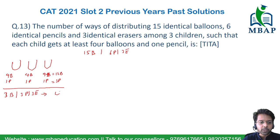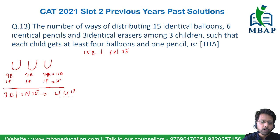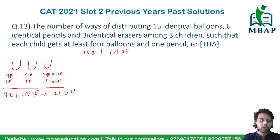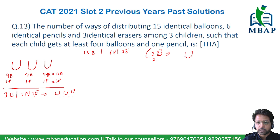These remaining items will be distributed among the 3 children with no further restrictions — it is possible that one or more children get 0 of any item. We can choose any element to distribute first; since all three item types have exactly 3 remaining, let's start by distributing the 3 identical balloons to the 3 children.